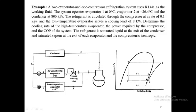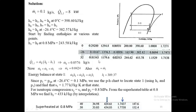The mass flow rate from the compressor is 0.1 kg/s. The low-temperature evaporator serves a cooling load of 8 kW — that is the bottom evaporator with a cooling capacity of 8 kW. We need to determine the cooling rate of the high-temperature evaporator, the power required by the compressor, and the COP of the system. The refrigerant is saturated liquid at the exit of the condenser, saturated vapor at the exit of the evaporator, and the compression process is isentropic.